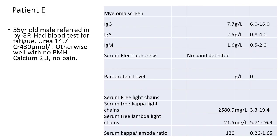So patient E. We have a 55 year old male referred by his GP. He's had a blood test because he's been very tired recently. His urea is a bit high, but that creatinine is pretty high too. He's otherwise well with no past medical history. His calcium is normal and he's got no pain. When we look at the screen, the immunoglobulins are all within normal limits. No band has been detected — so he does not have a paraprotein. However, that kappa light chain level is very high, with a ratio of 120.